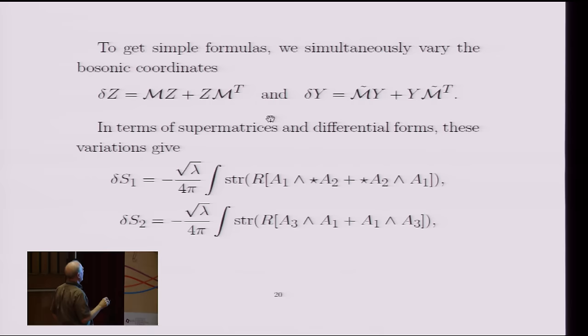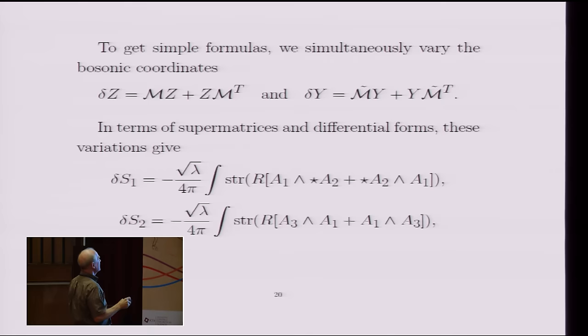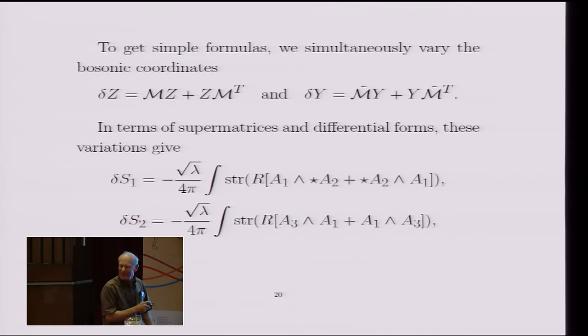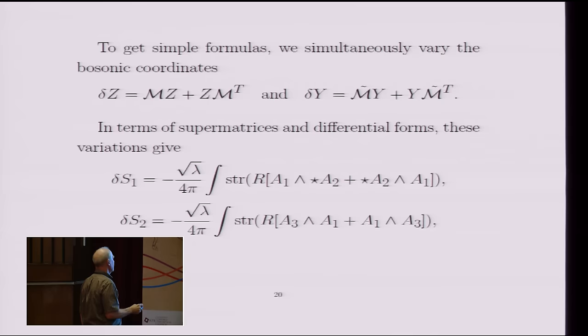And now, so that tells you how the thetas transform, and then it requires Z and Y to transform at the same time in this way. And then one can ask, how does the action transform under these transformations? And it turns out that the first term, the geometric term, the Nambu-Goto term, if you will, gives you this variation. And the Wess-Zumino term gives you this variation, where this matrix R that appeared in the previous thing, it is just these rows which, remember, were involved delta theta.